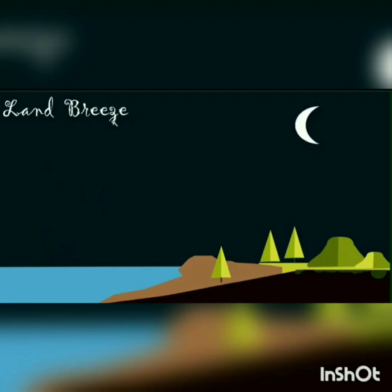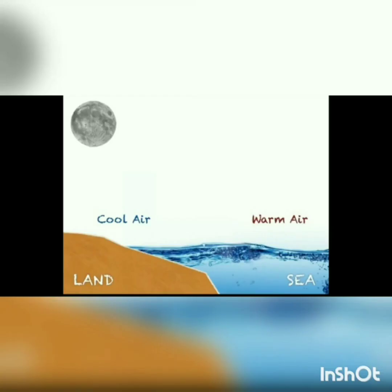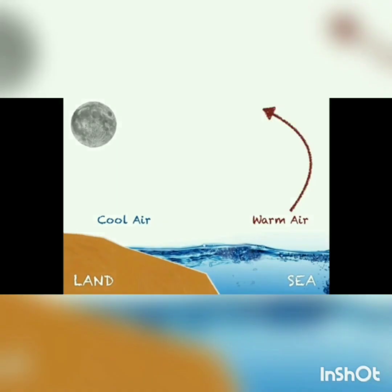During night, the land as well as the sea lose heat. However, the land loses its heat more rapidly compared to the sea. Thus, the air above the land becomes colder than the sea. Hence, we have warm air over the sea and cool air over the land. Again, the warm air above the sea expands and rises up, while the cool air over the land sinks.